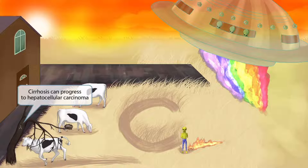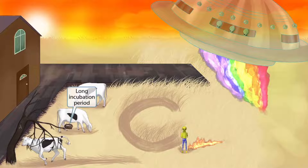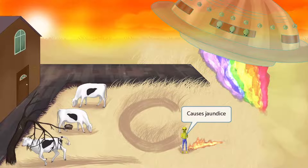Look at the cute little bird's nest on the end of this long branch — the eggs need to incubate until they are ready to hatch. These incubating eggs on this long branch remind you that the incubation period for hepatitis C is long. Now look at the skin of this alien — it's yellow. This represents the jaundice caused by hepatitis C, which makes sense because hepatitis is inflammation of the liver, known to cause jaundice.